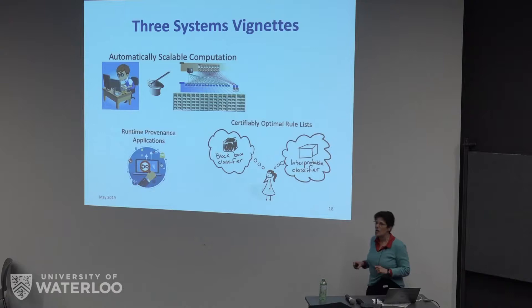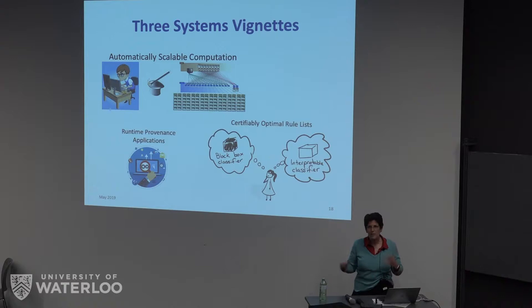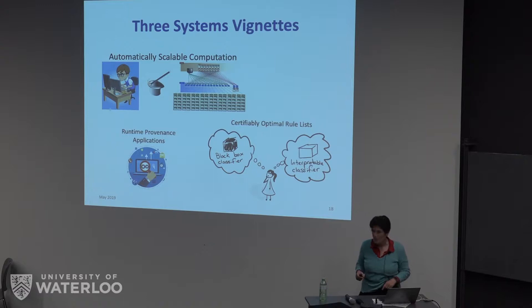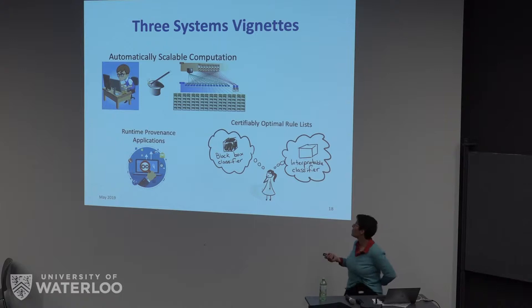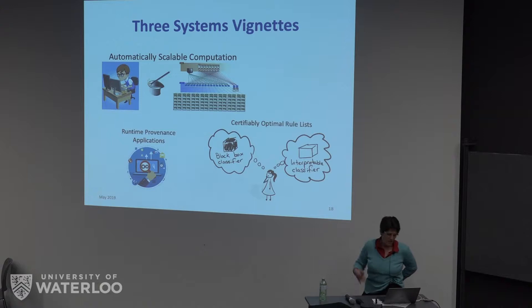On that note, let's talk about some research vignettes. Ideally we will tell three stories. The first is something called automatically scalable computation — what happens when a really bold student comes to graduate school. The second is a discussion about runtime provenance applications. The third is certifiably optimal rule lists, which is often thought of as machine learning or optimization, but I'm going to tell you it's systems.